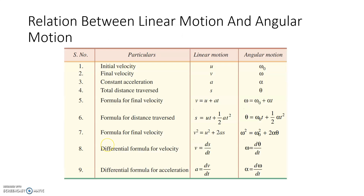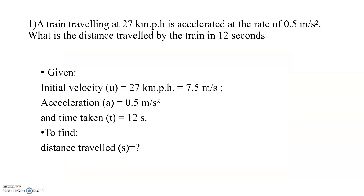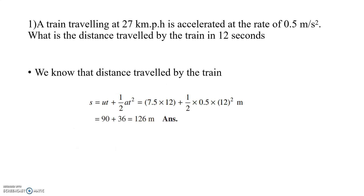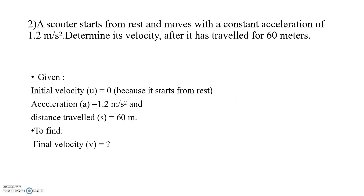From the equations of motion we know s = ut + ½at². Simply apply the formula and substitute the values: converting 27 km/h to m/s and using a = 0.5 m/s², t = 12 s, we get the distance traveled by the train in 12 seconds as 126 meters.